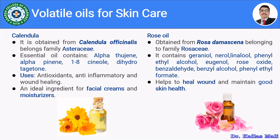The second volatile oil is rose oil, obtained from Rosa damascena belonging to family Rosaceae. It is obtained by distillation process. It contains geraniol, nerol, linalool, phenyl ethyl alcohol, eugenol, rose oxide, benzaldehyde, benzyl alcohol and phenyl ethyl formate. It helps with wound healing and maintains good skin health. It is also used as a flavoring agent and has a great role in skin care products.